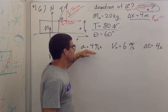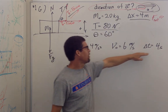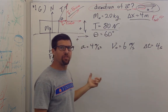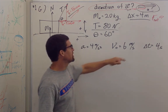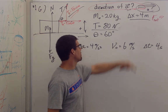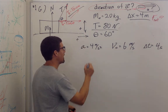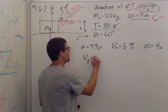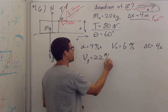For 1G, if I know the acceleration and I know the time, I can find the change in velocity and add that to the initial 6 meters per second. So I end up with v-final equals 22 meters per second.